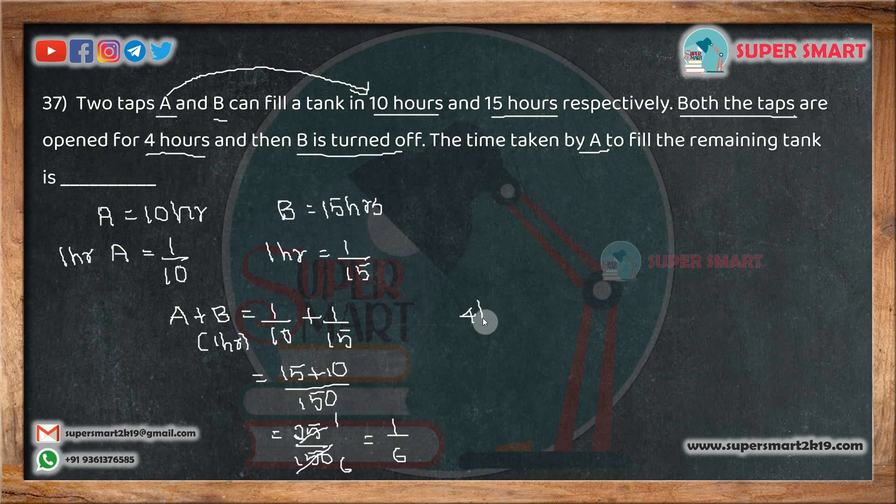4 hours, A plus B work is 1 by 6, so 4 into 1 by 6 is 2 by 3. How do we do this? 4 hours to complete. If you find the remaining part, 2 by 3 is complete. So if you find the remaining part, it is 3 minus 2 divided by 3, which is 1 by 3.